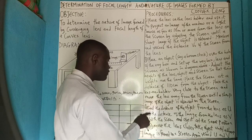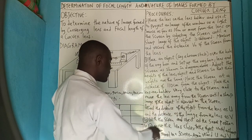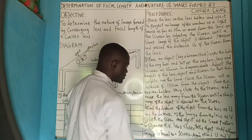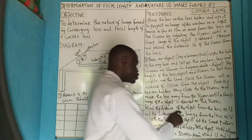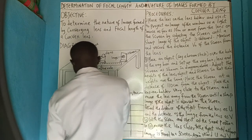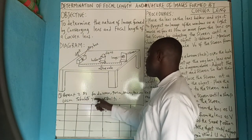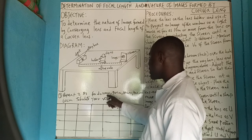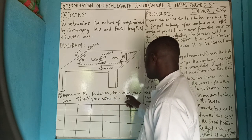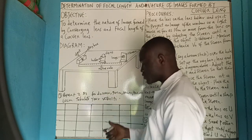Move the lens closer to the object until a sharp image is formed on the screen again; record U and V. Repeat for D equals 100 cm, 90 cm, 80 cm, 70 cm, and 60 cm. Tabulate your results.